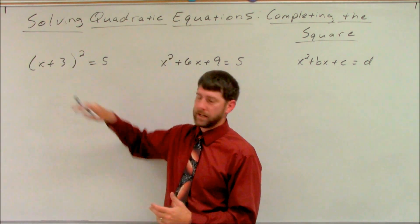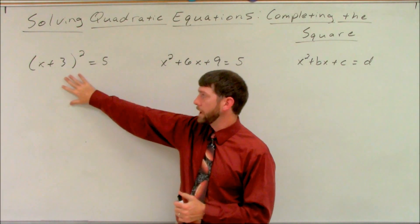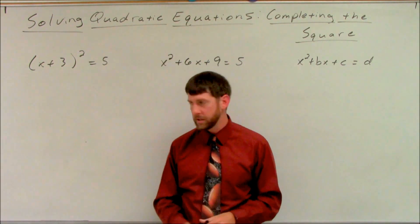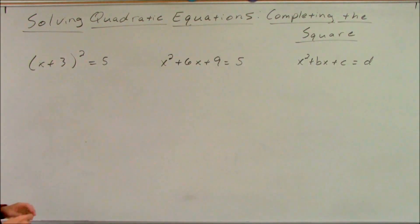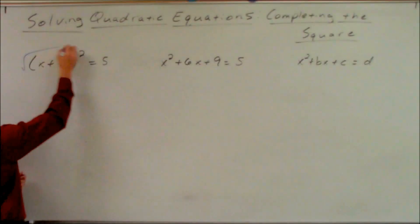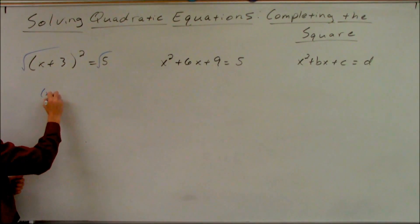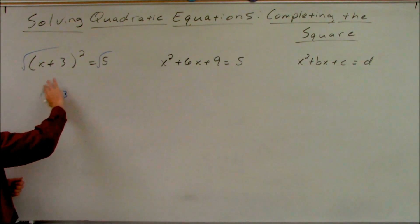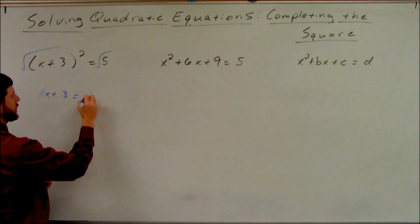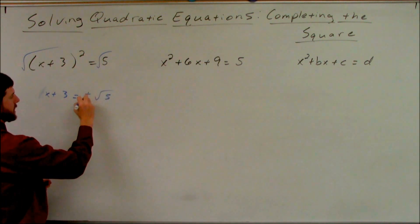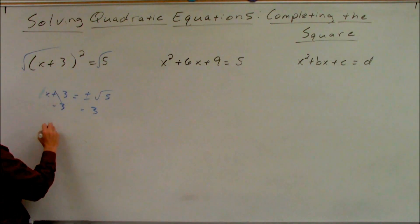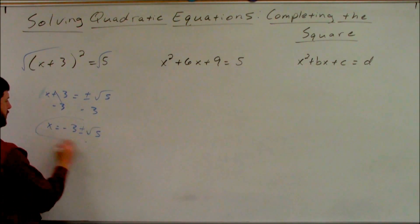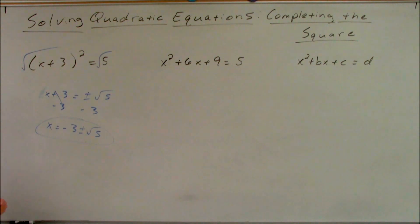Let's start by going back to square roots and solving by square roots. If I had an expression like this and I wanted to solve it, let's get the variable by itself. The first thing stopping me from getting to x is that square, so we eliminate squares by taking the square root of both sides. Square root of a square leaves me the radicand, equal to square root of 5 on the right-hand side. Don't forget your plus or minus on that. Then we solve — subtract 3 — so we get negative 3 plus or minus square root of 5.